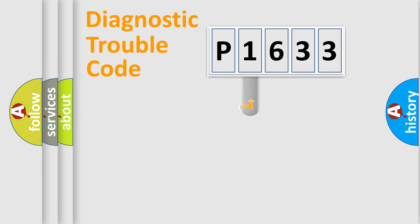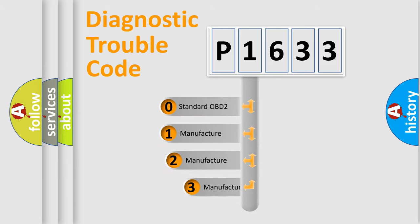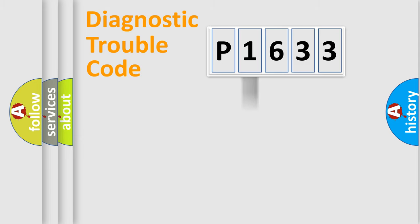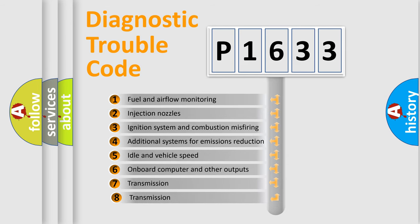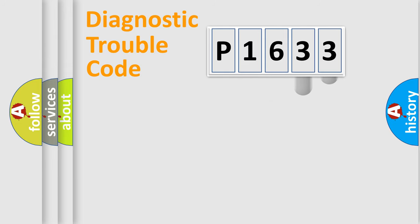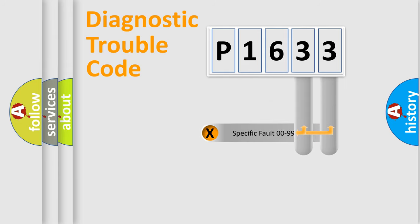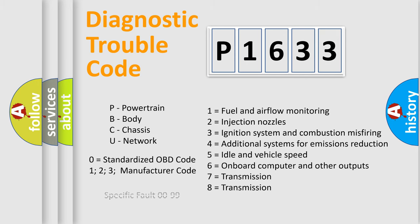This distribution is defined in the first character of the code. If the second character is expressed as zero, it is a standardized error. In the case of numbers 1, 2, or 3, it is a more manufacturer-specific expression of the car error. The third character specifies a subset of errors. The distribution shown is valid only for the standardized DTC code, and the last two characters define the specific fault of the group. This division is valid only when the second character is zero.